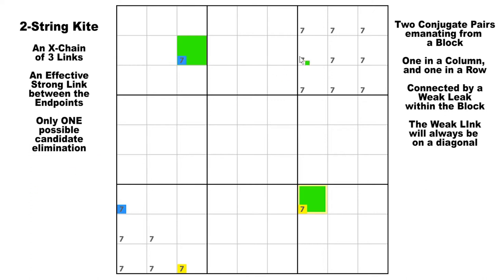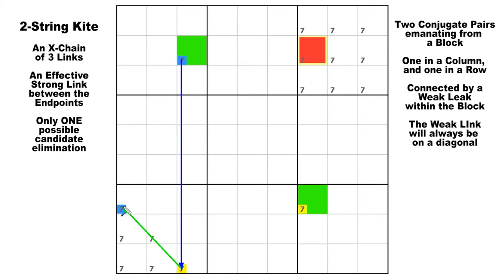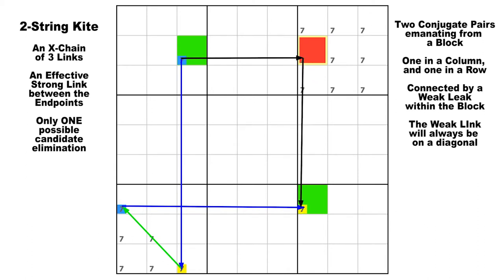The candidate seven in row two, column seven must be false because it can see both of the endpoints, so it can be eliminated. This configuration is simply an X-chain or a turbo fish, but when it takes on this specific shape, it is commonly referred to as a two-string kite.